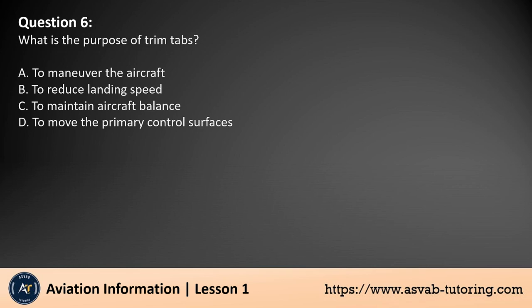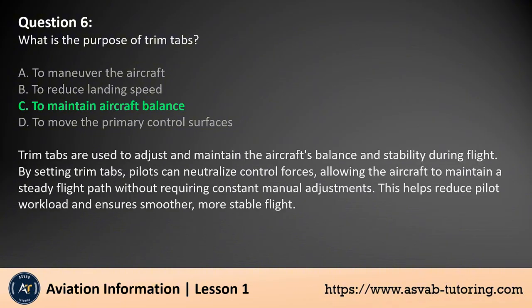Question 6. What is the purpose of trim tabs? A. To maneuver the aircraft. B. To reduce landing speed. C. To maintain aircraft balance. D. To move the primary control surfaces. The answer is C. Trim tabs are used to adjust and maintain the aircraft's balance and stability during flight. By setting trim tabs, pilots can neutralize control forces, allowing the aircraft to maintain a steady flight path without requiring constant manual adjustments. This helps reduce pilot workload and ensures smoother, more stable flight.